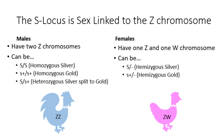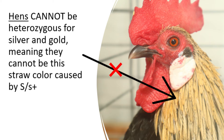The S-locus is located on the Z chromosome. Males have two Z chromosomes, meaning they can be homozygous for silver, homozygous for gold, or heterozygous for both. Hens only have one Z and one W chromosome. This means that they can only be hemizygous for silver or hemizygous for gold. Hens cannot be heterozygous for silver and gold, because they only have one Z chromosome, meaning hens cannot ever be this straw color.